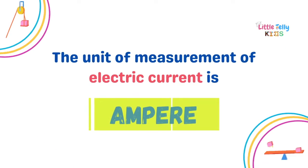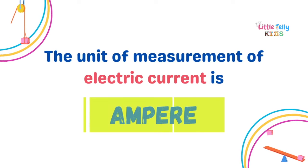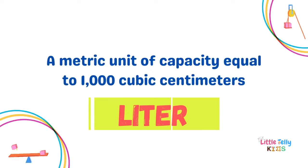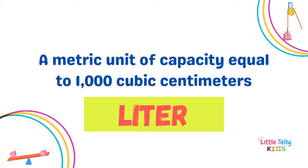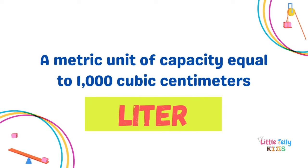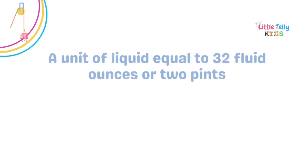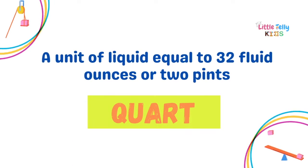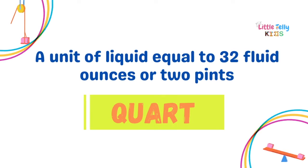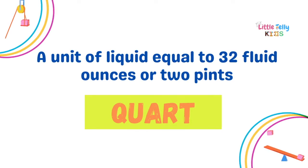The unit of measurement of electric current is Ampere. A metric unit of capacity equal to 1000 cubic centimeters is Liter. A unit of liquid equal to 32 fluid ounces or two pints is Quart.